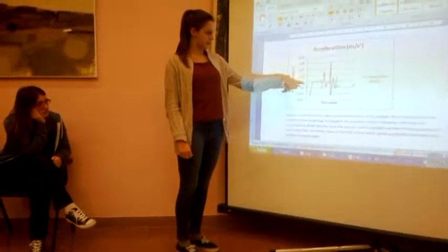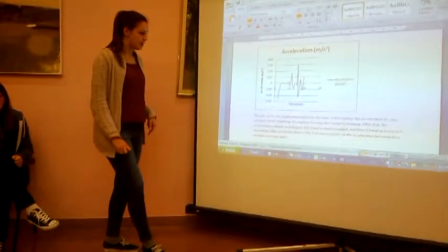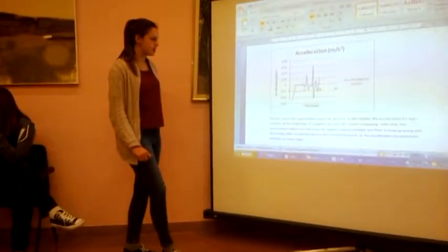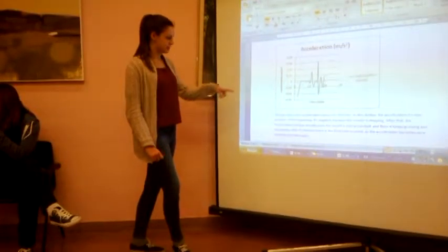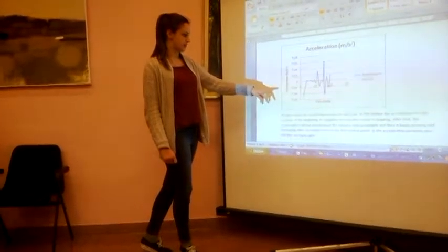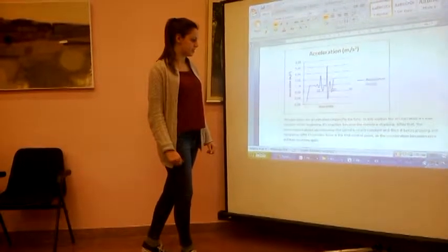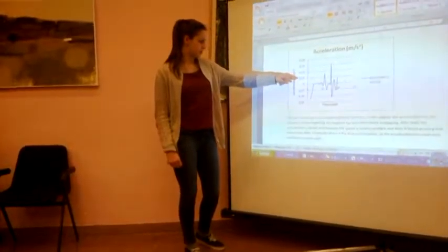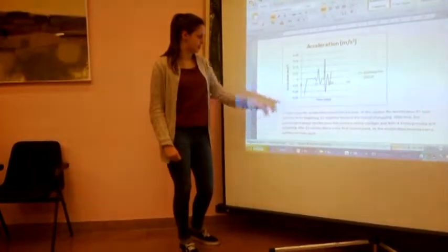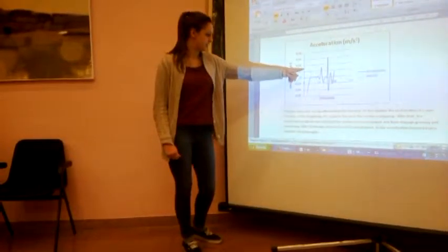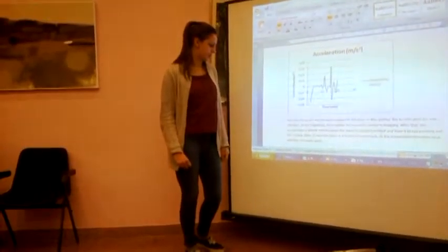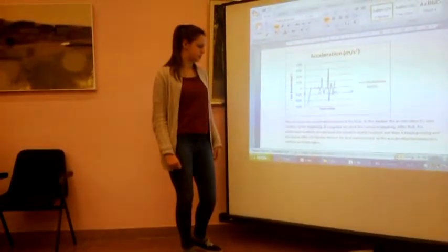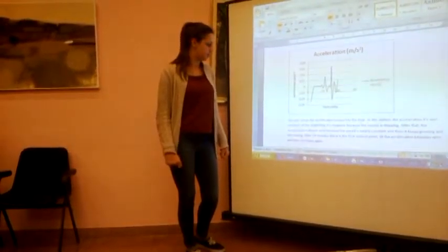This is the line of the acceleration, and in this motion the acceleration is non-constant. At the beginning it's negative, then the runner stops and the acceleration becomes zero. The speed is almost constant, and then it keeps growing.